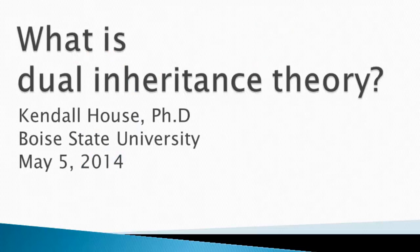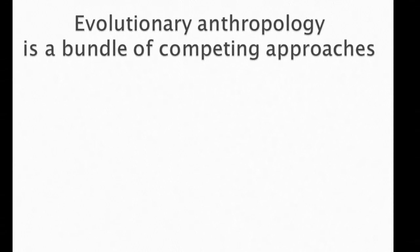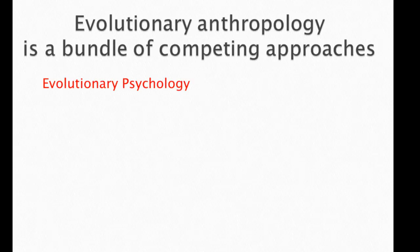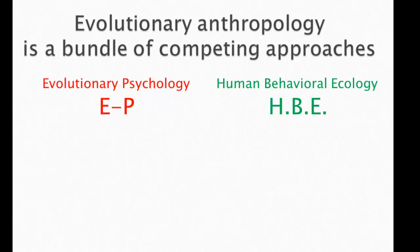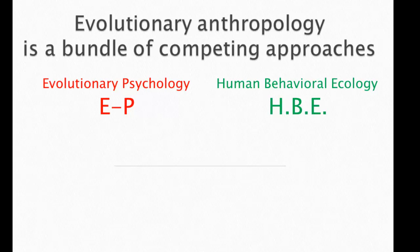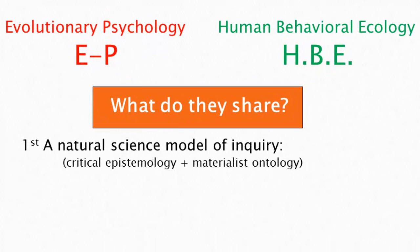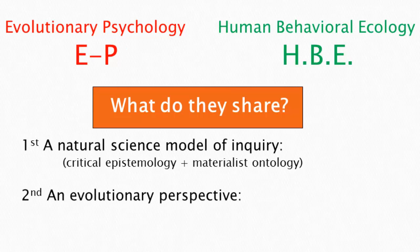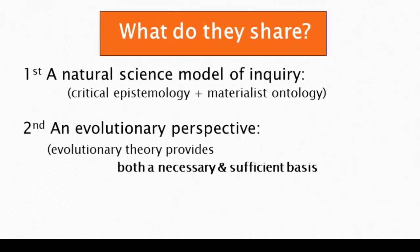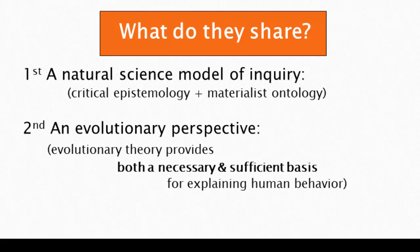This presentation is called 'What is Dual Inheritance Theory?' As we discussed earlier in the semester, evolutionary anthropology is a bundle of competing approaches, consisting of evolutionary psychology as well as human behavioral ecology. These approaches share a natural science model of inquiry based on critical epistemology, a materialist ontology, an evolutionary perspective, and the argument that evolutionary theory provides both a necessary and sufficient basis for explaining human behavior.